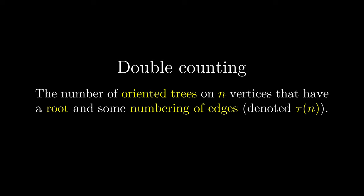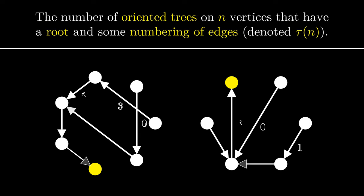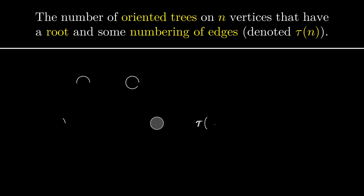Here are two examples of what the trees could look like. First, let's just count the number of trees without root and edge numbering. This, from definition, equals κ(n).